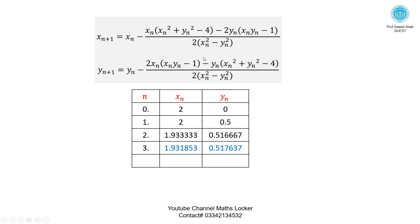Now substituting these values in the formula for the fourth iteration. Then we have a result 1.931852, 0.517638.